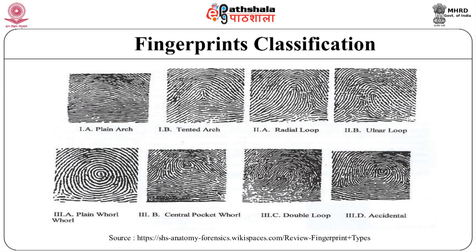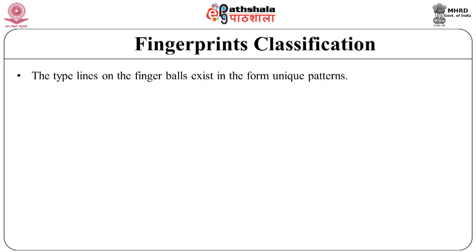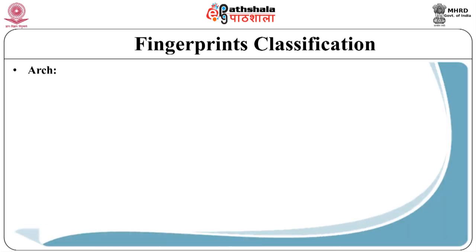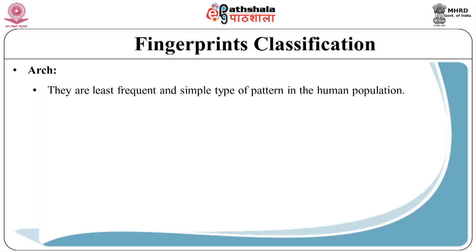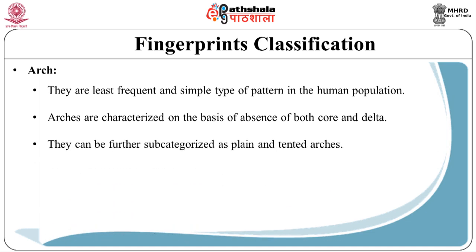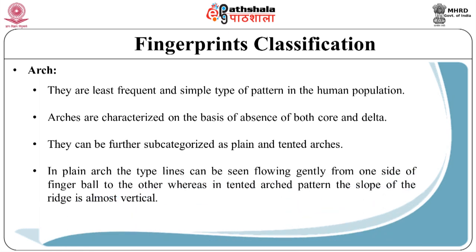Now let's move to fingerprint classification. The type lines on the finger exist in the form of unique patterns, primarily identified as arc, loop, and whorl on the basis of absence, presence, and number of deltas and cores. Arcs are the least frequent and simplest type of pattern in the human population. They are characterized by the absence of both core and delta, and can be further sub-classified as plane arc and tented arc. In a plane arc, the type lines flow gently from one side of the finger to the other. In a tented arc, the loop of the ridge is almost vertical.